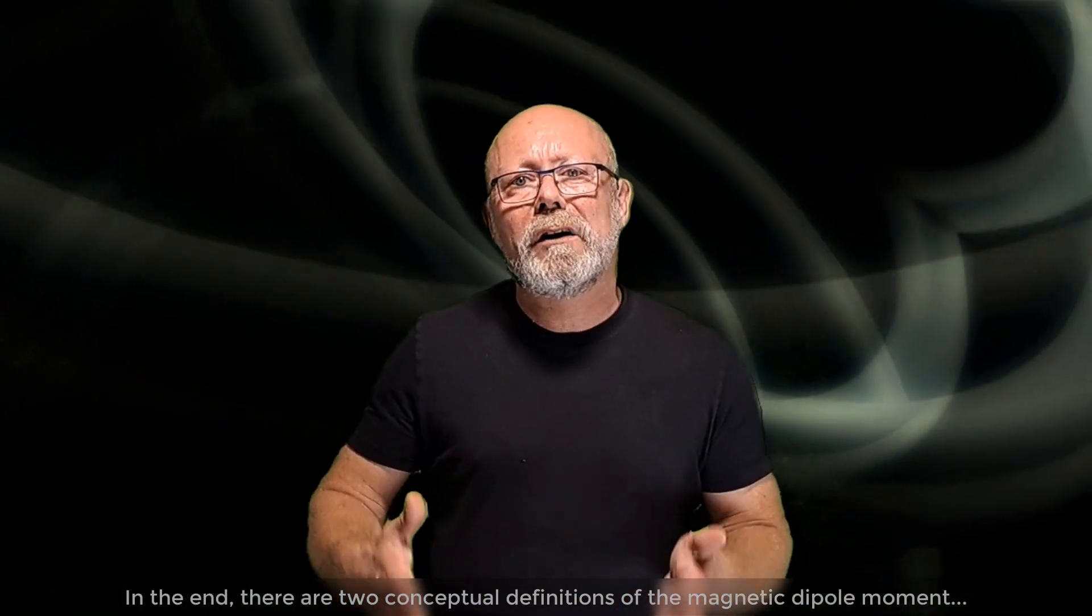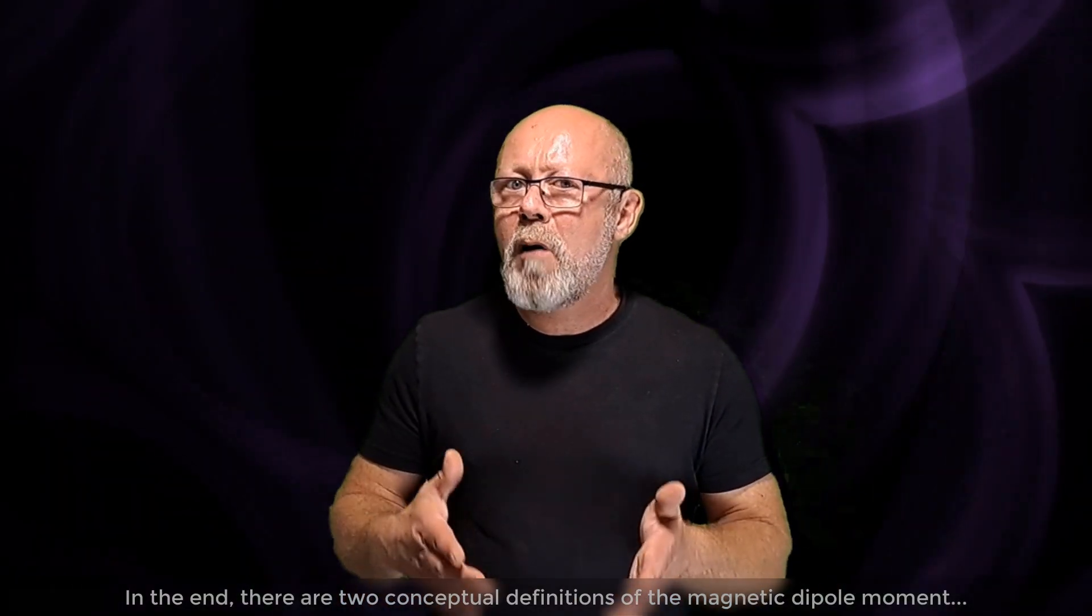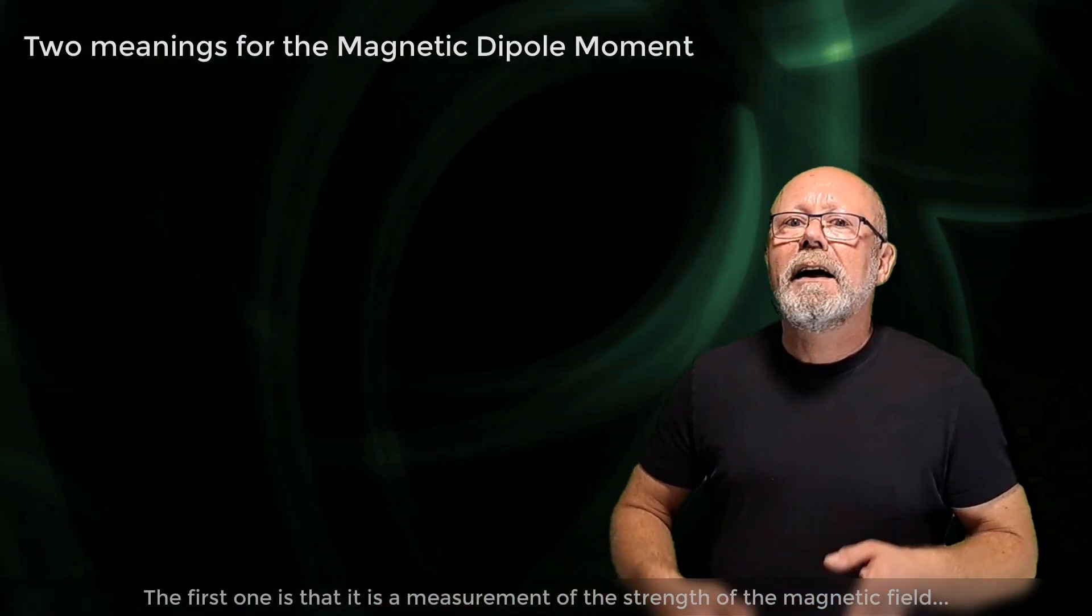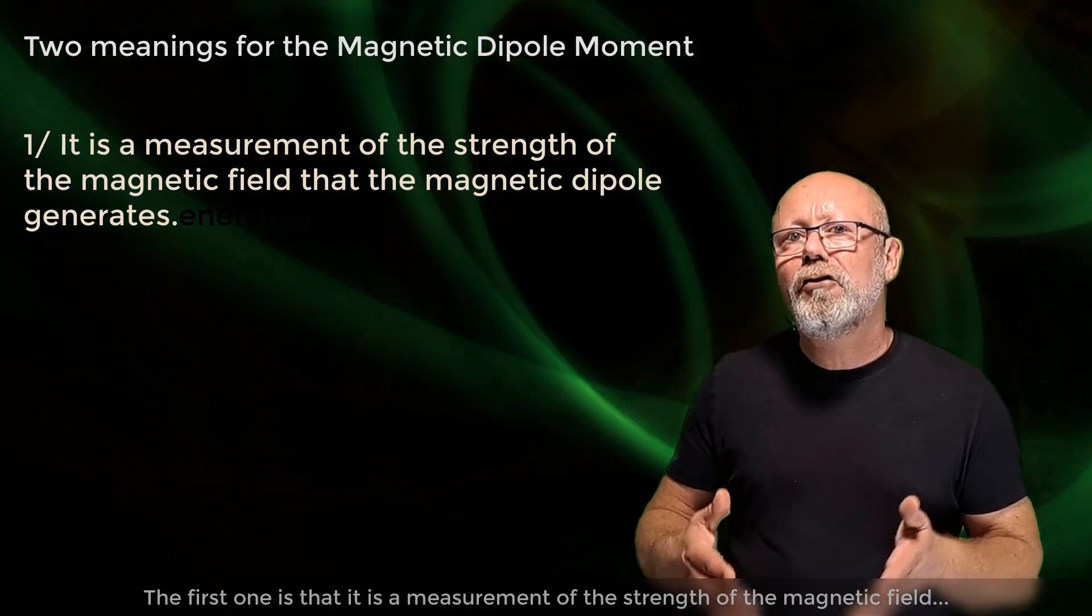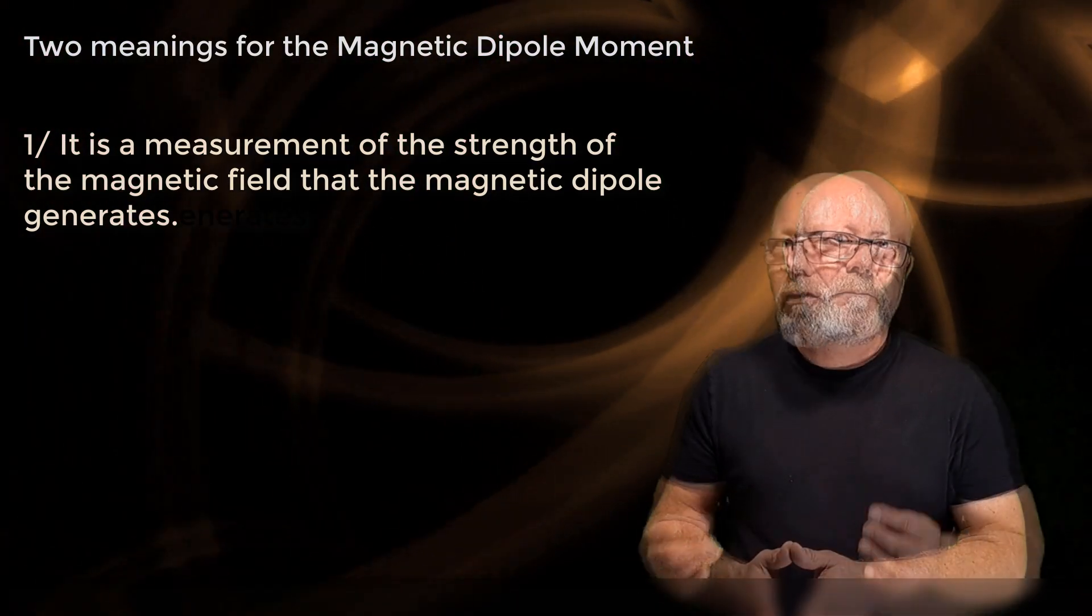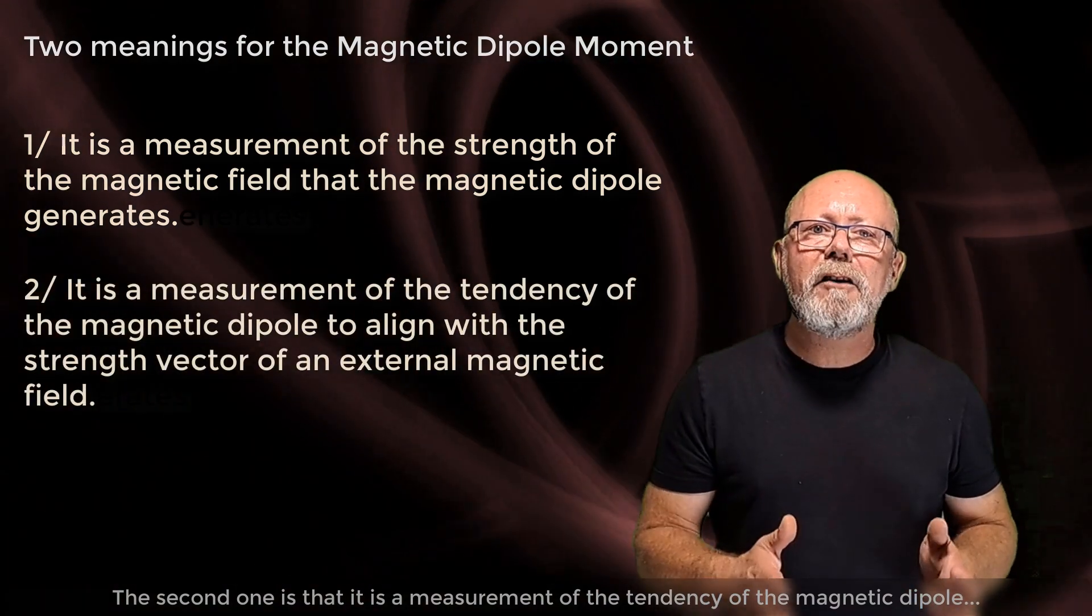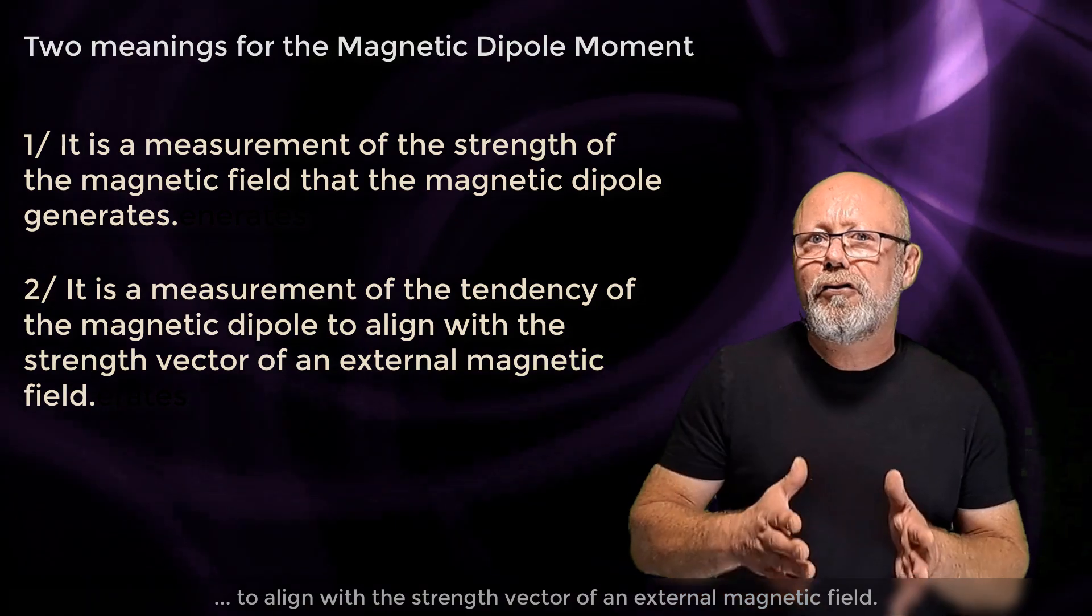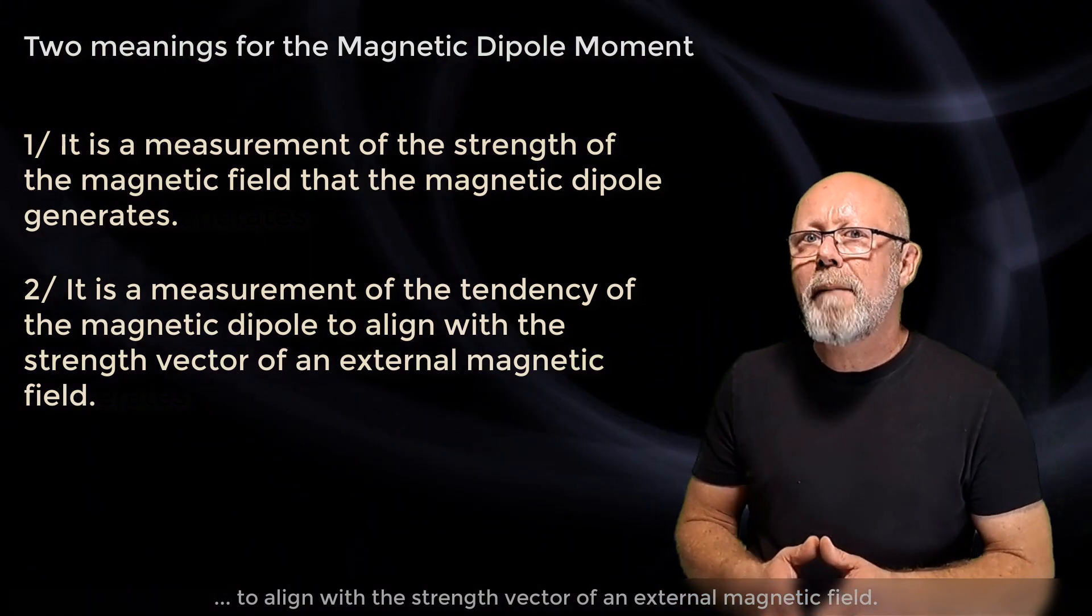In the end, there are two conceptual definitions of the magnetic dipole moment that I consider as being solid. The first one is that it is a measurement of the strength of the magnetic field that the magnetic dipole generates. The second one is that it is a measurement of the tendency of the magnetic dipole to align with the strength vector of an external magnetic field.